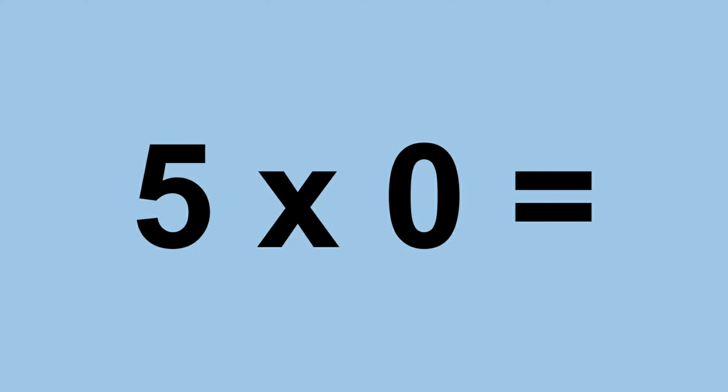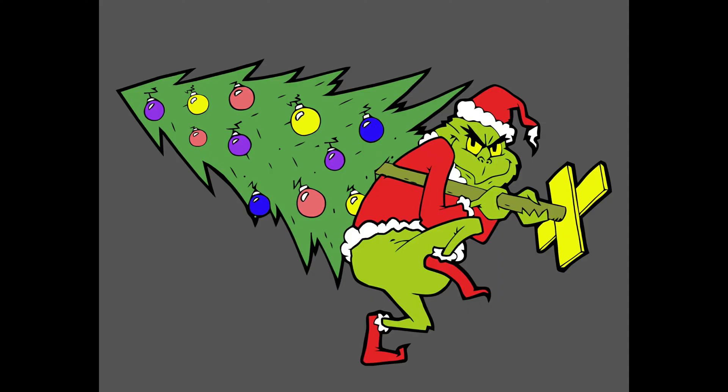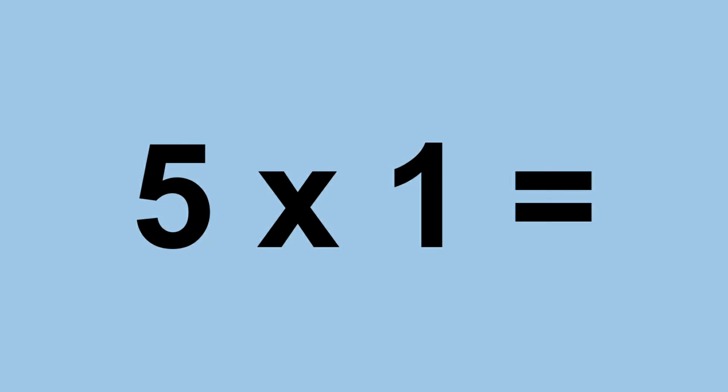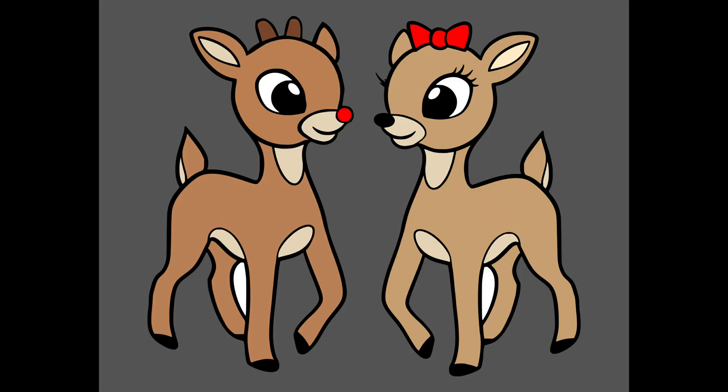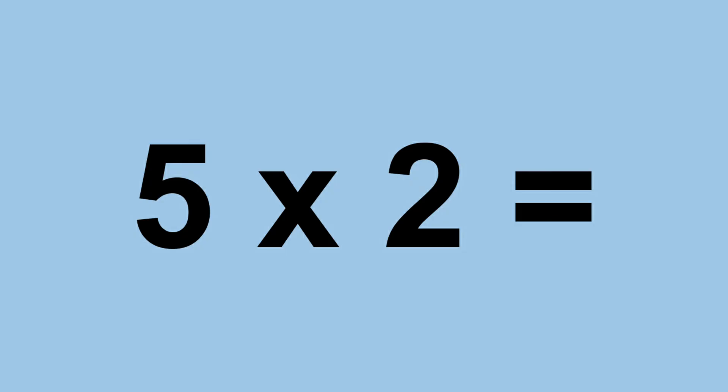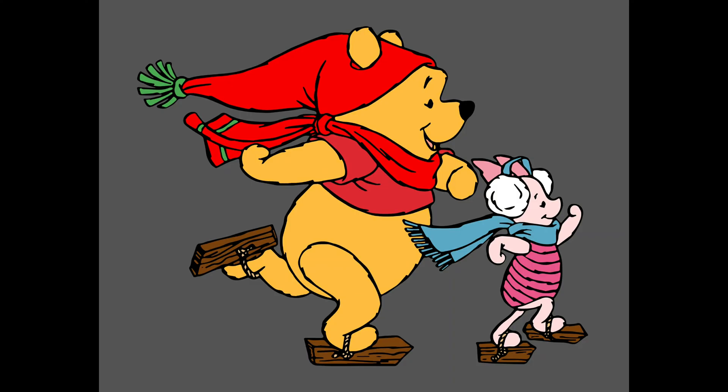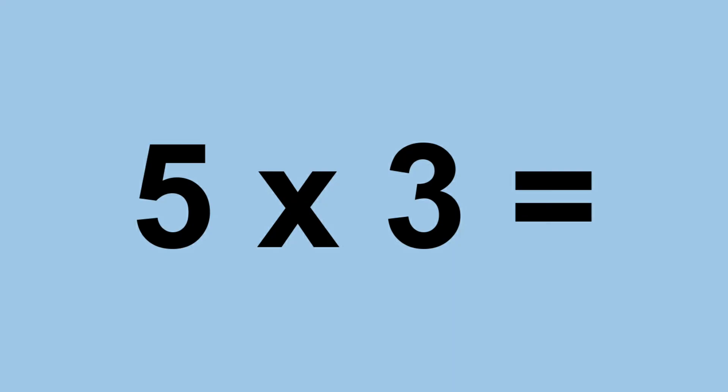Five times zero equals zero. Five times one equals five. Five times two equals ten. Five times three equals fifteen.